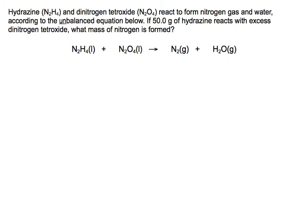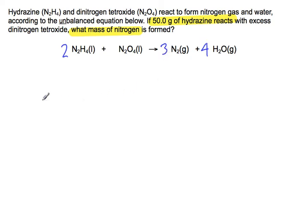Here's another question. Hydrazine (N₂H₄) reacts with dinitrogen tetroxide (N₂O₄) to form nitrogen gas and water. If 50 grams of hydrazine reacts with excess dinitrogen tetroxide, what mass of nitrogen is formed? First we balance the equation: start with water — put a 4 to balance oxygen; then balance hydrogen — put a 2 in front of hydrazine, giving 8 hydrogens; then balance nitrogen: 4 + 2 = 6 nitrogens, so put a 3 in front of N₂. The equation is now balanced.